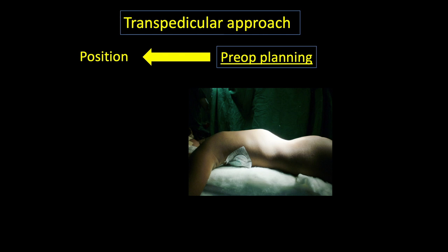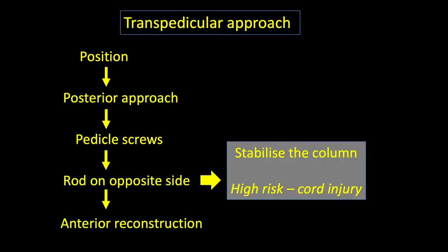In the pre-operative planning, the position of the patient is prone on bolsters. The sequence is: we expose it posteriorly, put in the pedicle screws. I usually insert a rod on the opposite side to stabilize the column, as this involves a high risk of injury to the cord, and then we carry on with the anterior reconstruction.